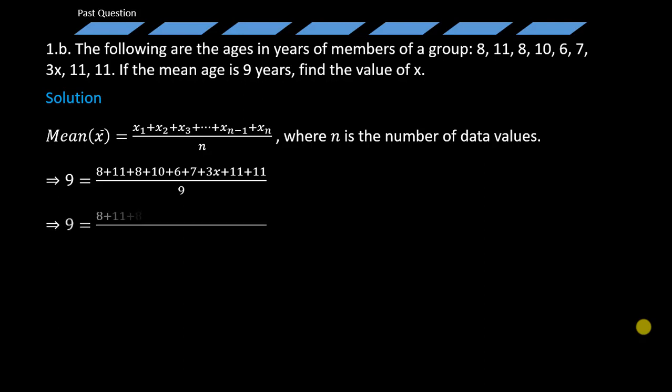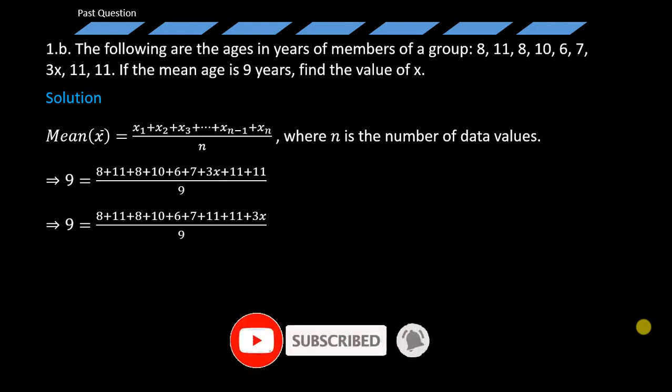Now regrouping the terms, you get to realize that we now have our mean, which is 9, equals 8 + 11 + 8 + 10 + 6 + 7 + 11 + 11 + 3X, all over 9. We have grouped all the constants at one side of the numerator.